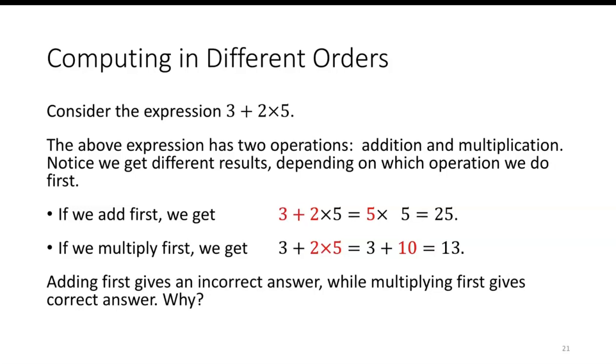For instance, if I add first, 3 plus 2 is 5, and then 5 times 5 is 25. If I multiply first, 2 times 5 is 10, and 3 plus 10 is 13. When it comes down to it, adding first gives us an incorrect answer, while multiplying first gives us a correct answer, which means the correct answer is actually 13.